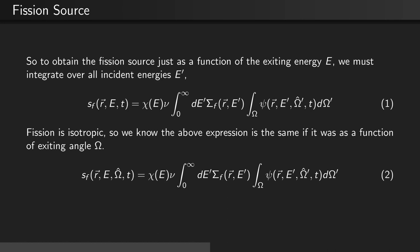Fission neutrons are isotropic, so we know that the above expression is the same as if it were a function of the exiting angle omega. So in this expression, the only thing that changes is that the left hand side is now a function of omega hat.